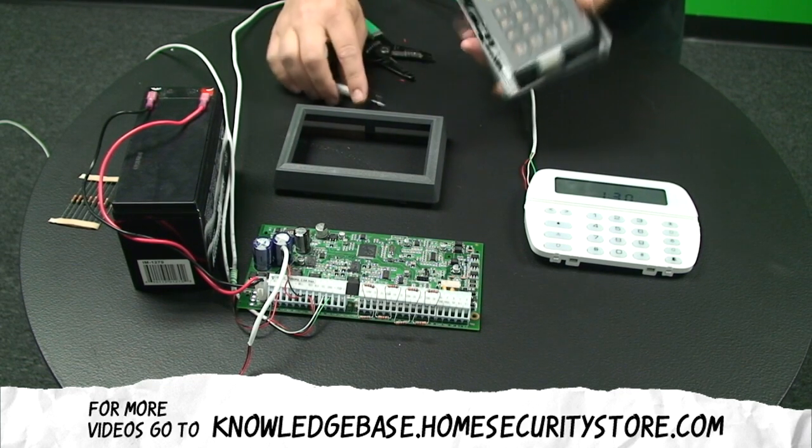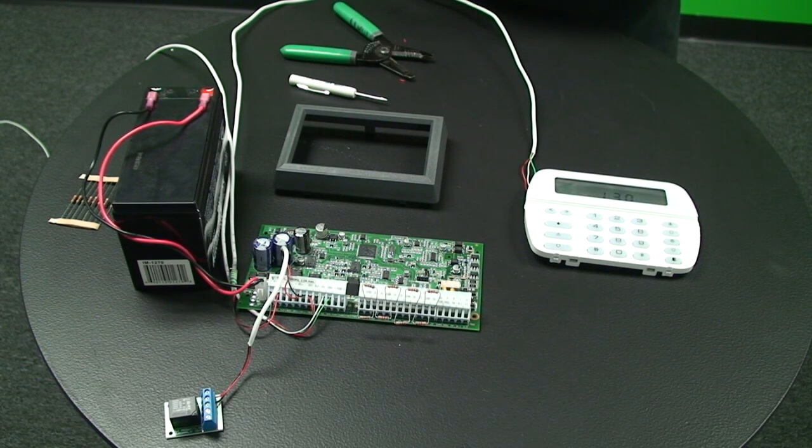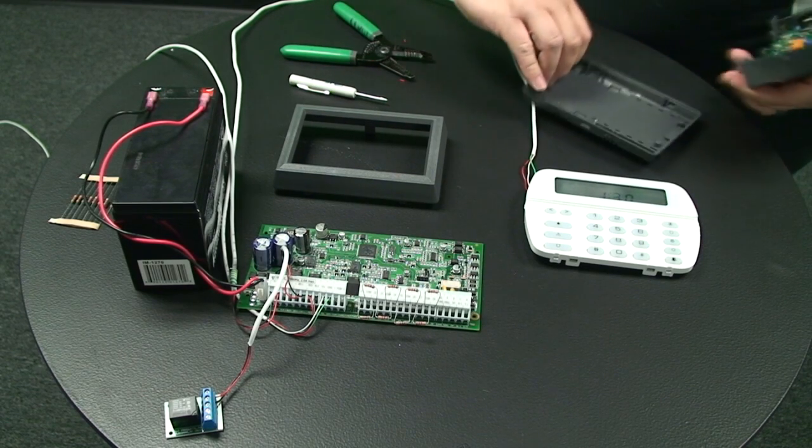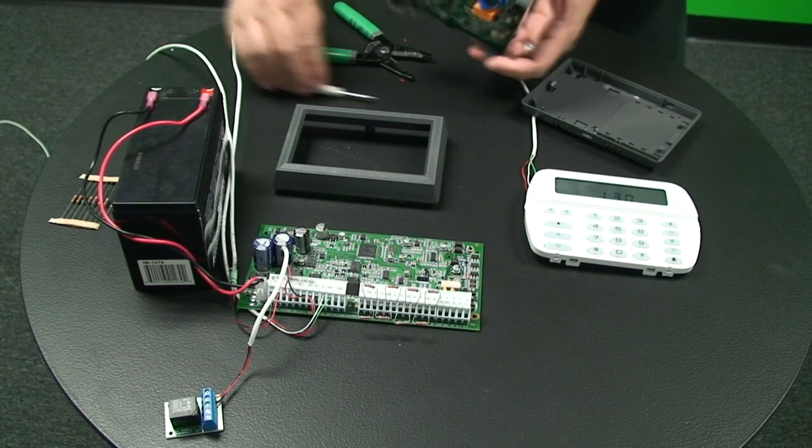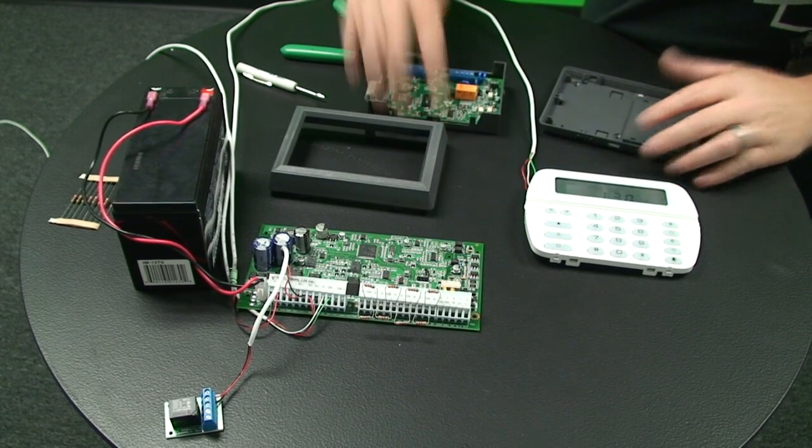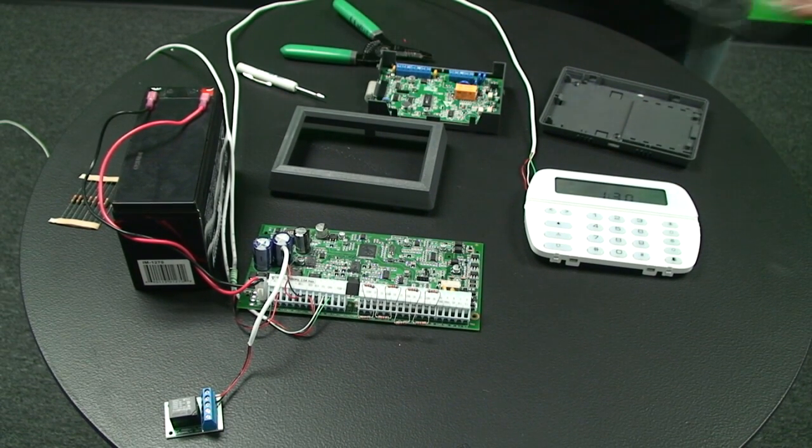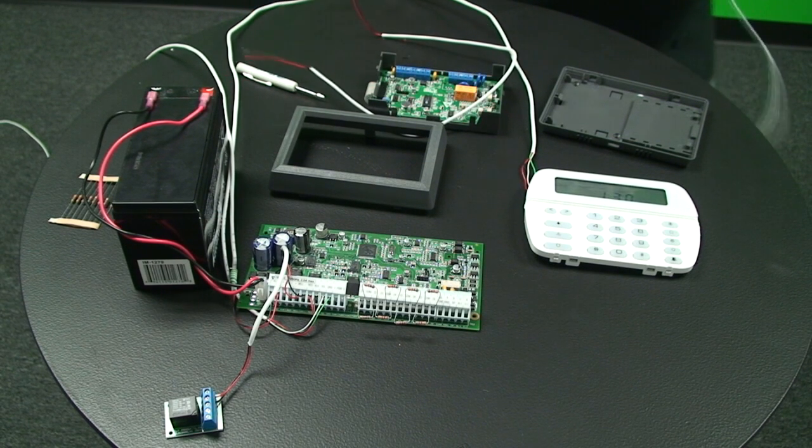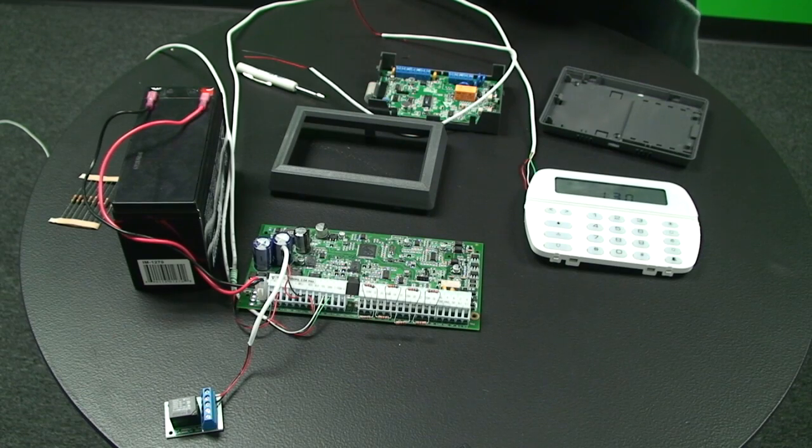So we'll just take this dialer apart. Alright, so what we'll do here first is we'll run up a wire from the relay. We'll wire to the relay first and then we'll come into the back of the dialer's case.